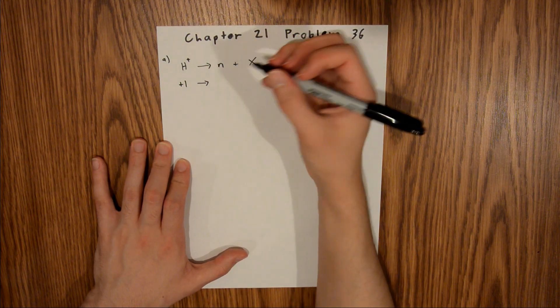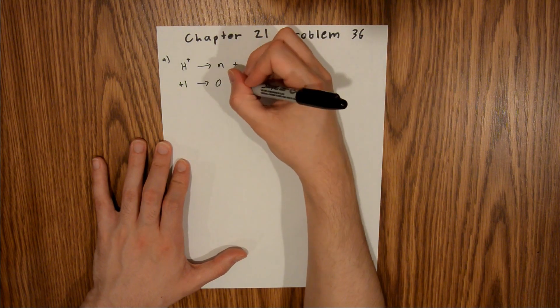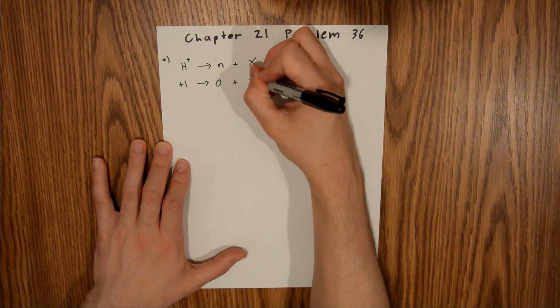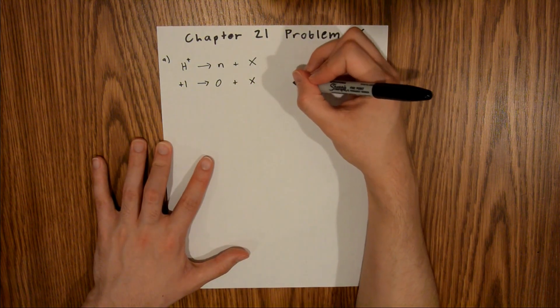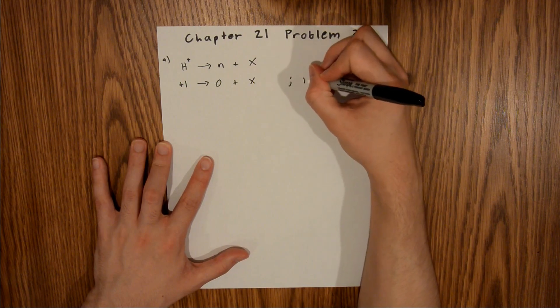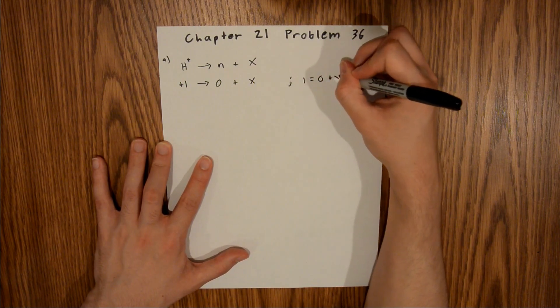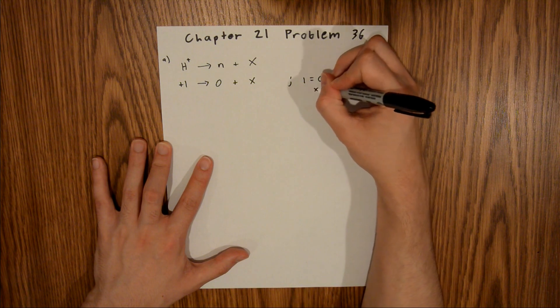a neutron has a charge of 0, and x we don't know yet, so we'll leave that as x. If we do this charge balance, we get 1 equals 0 plus x, meaning that x equals 1.